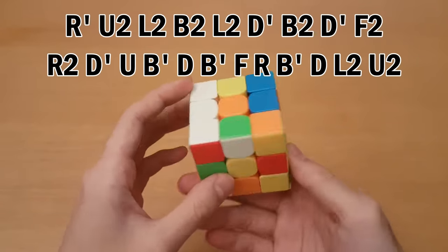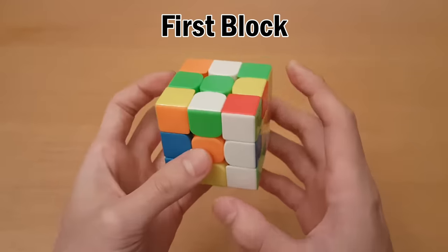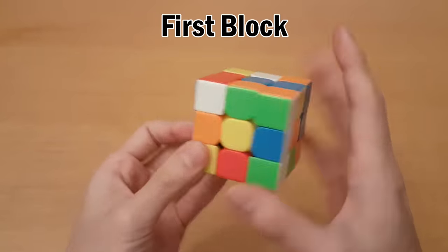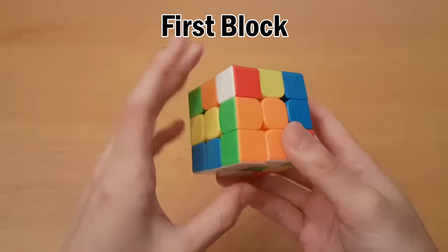All right, so here I'm going to have another example briefly. I see that we can pair up the orange and green together like this, and then the other edge is over here.